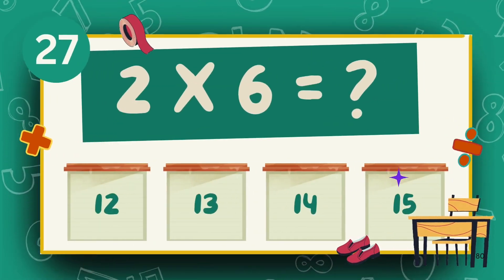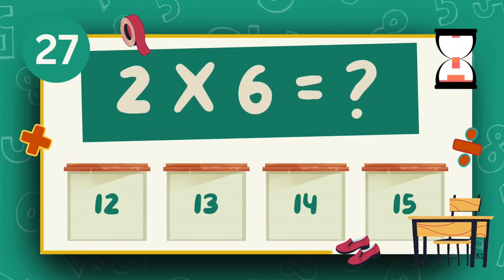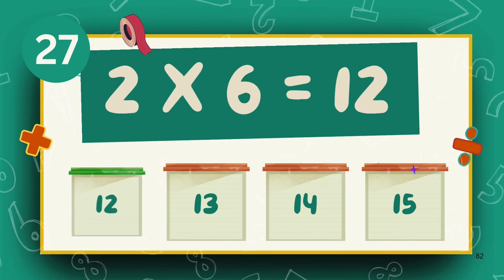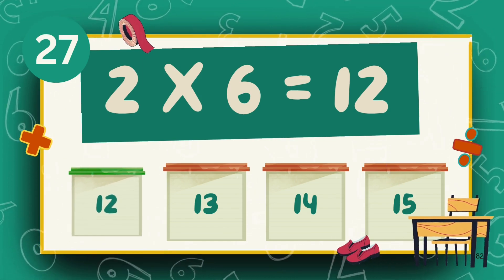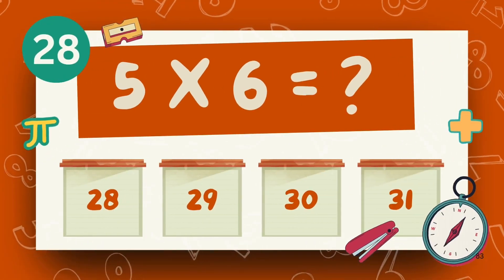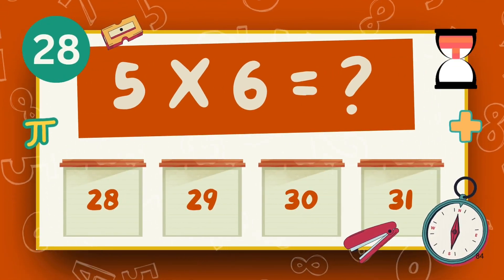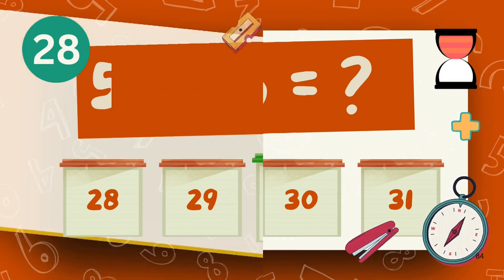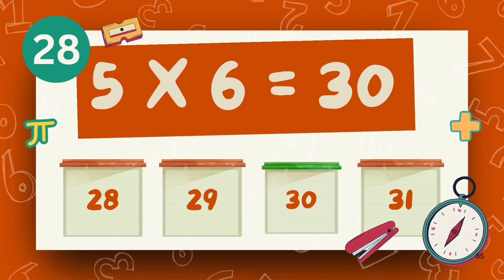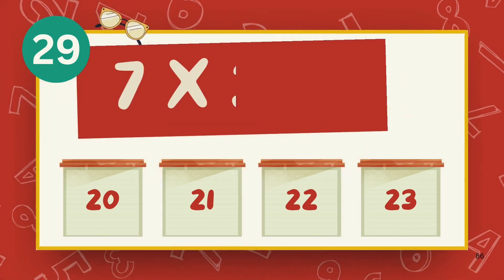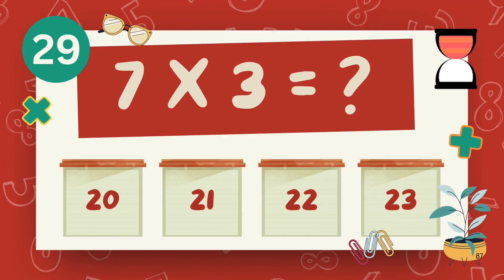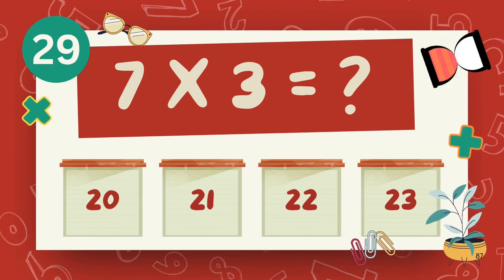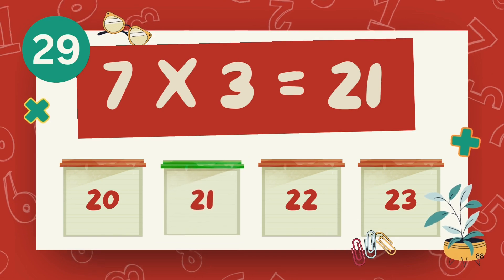What is 2 multiply 6? The answer is 12. What is 5 multiply 6? The answer is 30. What is 7 multiply 3? The answer is 21.